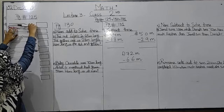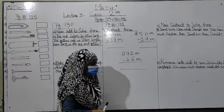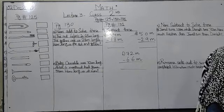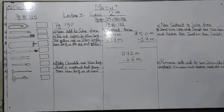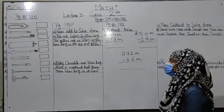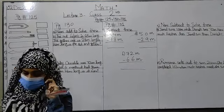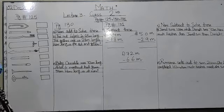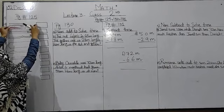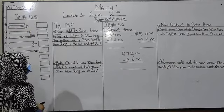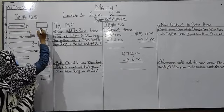Ab aap in shapes ki measurement karein. Scale nikaalein aur is shape ko measure karein aur mujhe bataaein ki iski measurement kya aa rahi hai. Jaldi se measure karein — scale se jahan se shape shuru ho rahi hai wahan se zero pe rakhna hai, aur jahan par end ho rahi hai wahan tak measure karna hai.